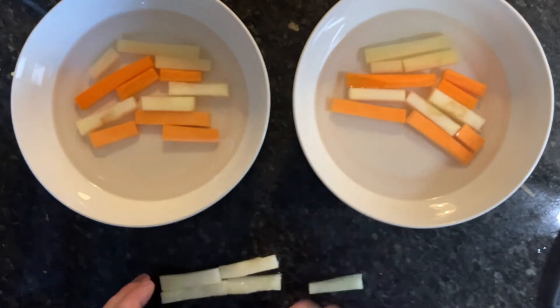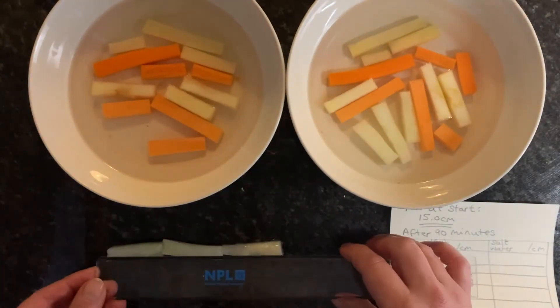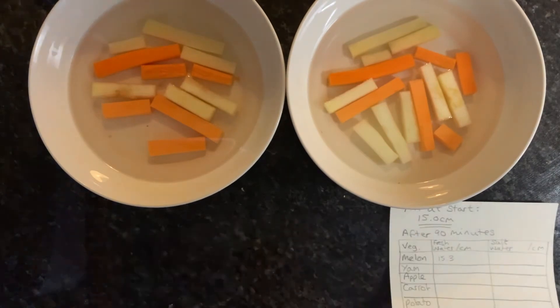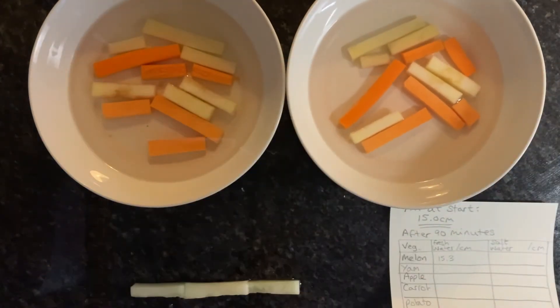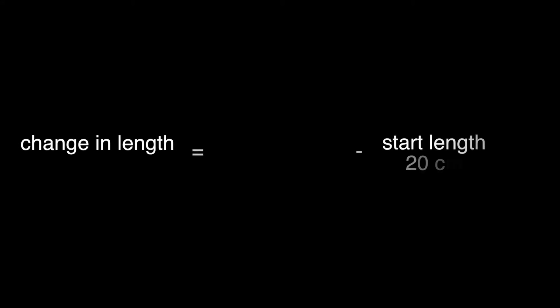We found most of the changes happen in just 90 minutes. So after 90 minutes, remove the pieces one set at a time. Reassemble into a row and record the new length. Work out changes in length as percentages by subtracting the start length from the final length, divide that answer by the start length, and then multiply by 100% to get your percentage change.